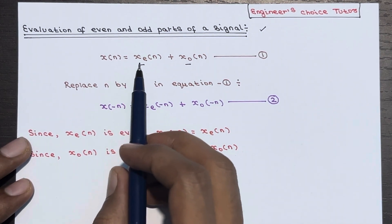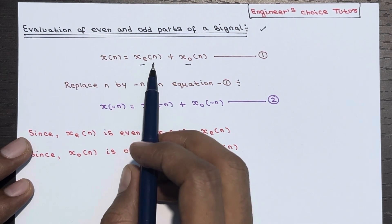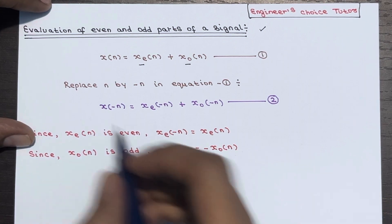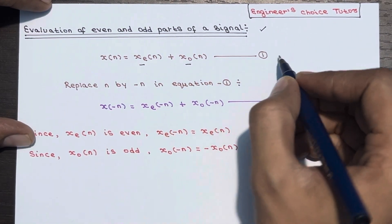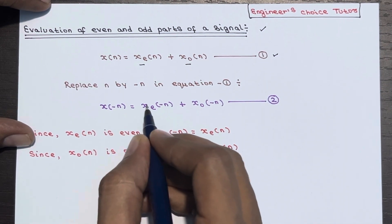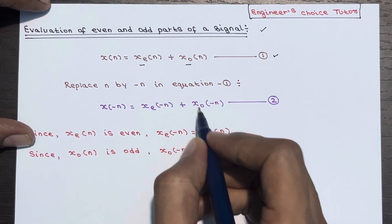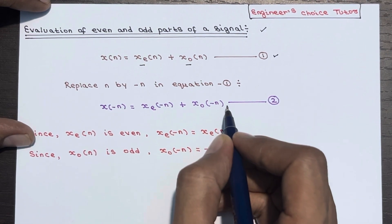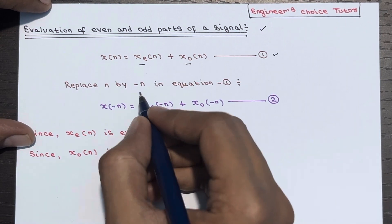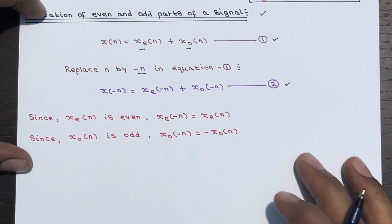We already know x(n) is equal to xe(n) plus xo(n), that is the even component and odd component. This is equation 1. If you replace n by minus n in equation 1, it will become: x(-n) is equal to xe(-n) plus xo(-n). This is equation 2 — we are simply replacing n by minus n.